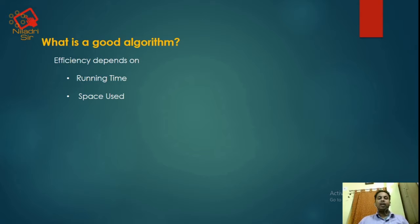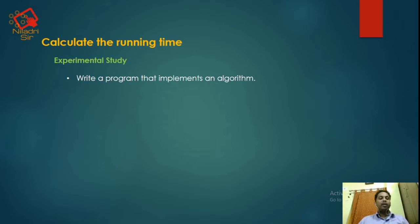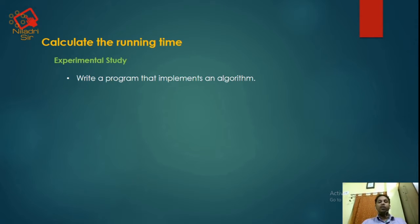The running time means the time the program executes, from the beginning to the end of the program. Now, how will we calculate the running time? We have an experimental study to calculate the running time of an algorithm or a program. In step one, we will write a program that implements an algorithm — in any programming language, that may be C, Java, or any other.